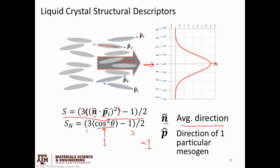As the average angle opens up and there's more variation, the cosine squared theta term is reduced below one, and the overall order parameter is also less than one. This is exactly what we're looking for — it's a scalar giving a quantitative measure of the average direction, calculated from the distribution of angles of all mesogens in the system. It gives a value of one for a perfectly ordered system, decreasing as disorder increases.